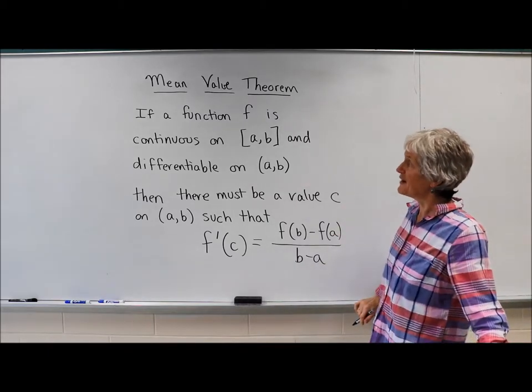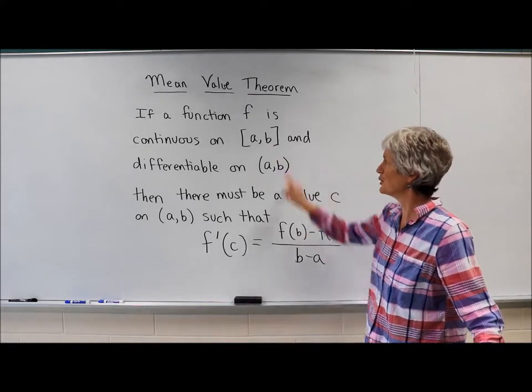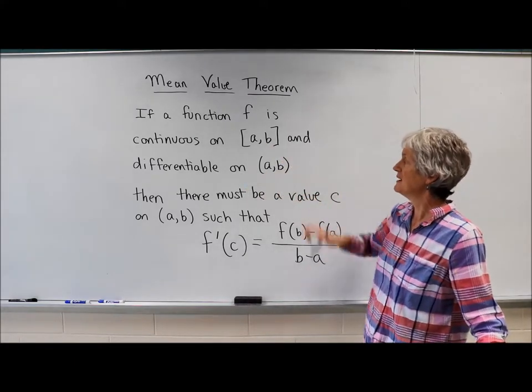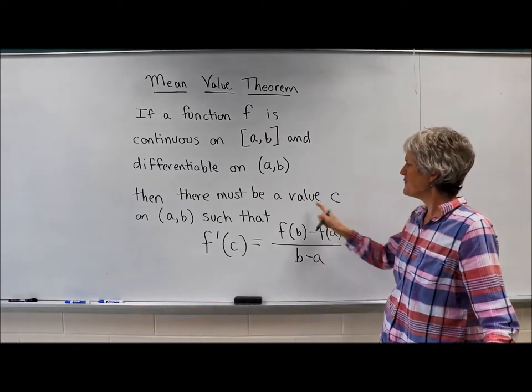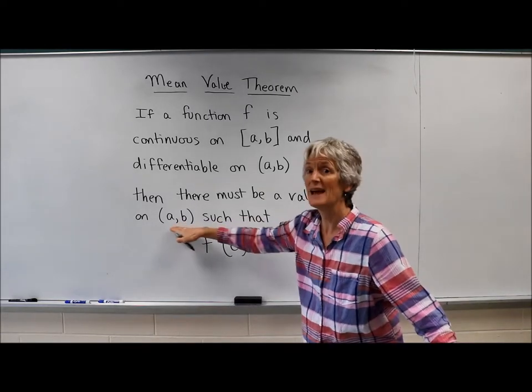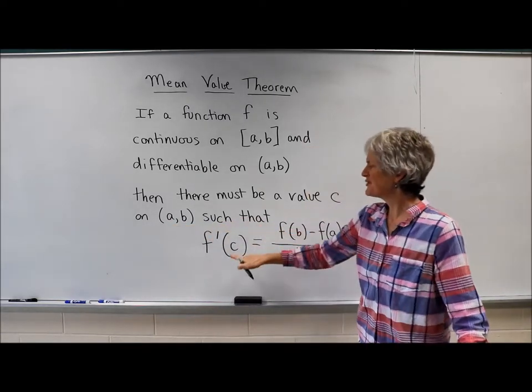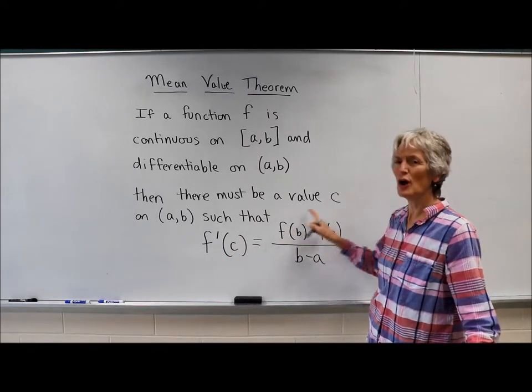If a function f is continuous on the closed interval [a,b] and differentiable on the open interval (a,b), then there must be a value, meaning an x value c, that's between a and b, such that the derivative at that point has to equal the slope.